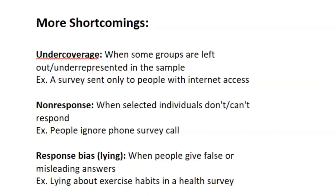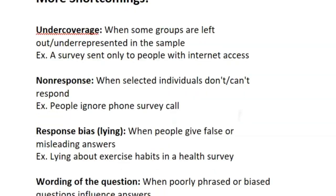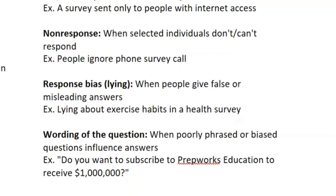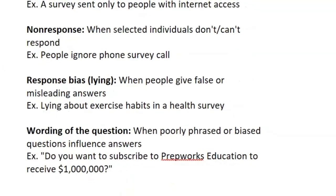Here are a couple more shortcomings. Number one is undercoverage — when some groups are left out or underrepresented in the sample. For example, if you send a survey only to people with internet access, people without internet access can't give their opinion, and therefore that is undercoverage.